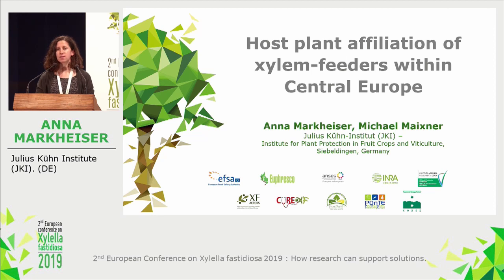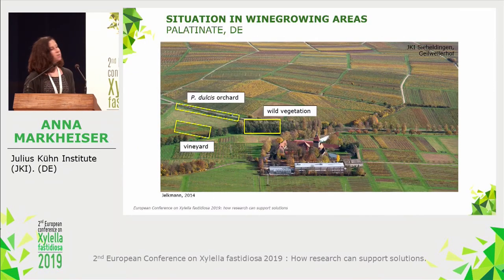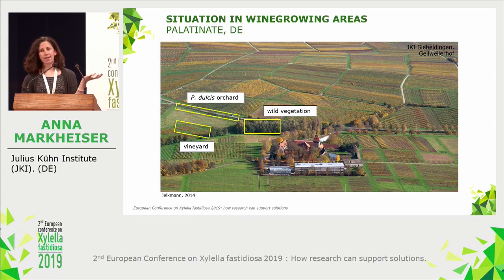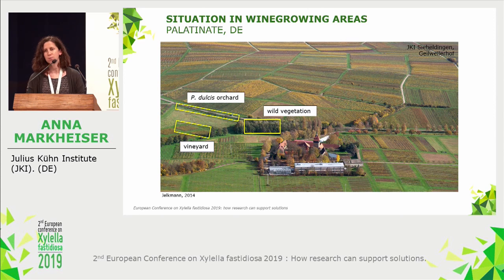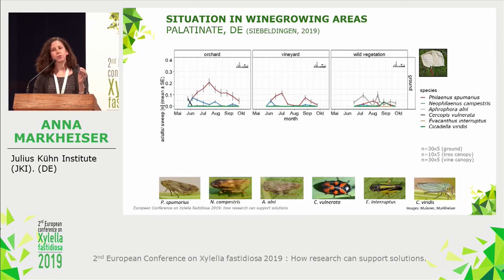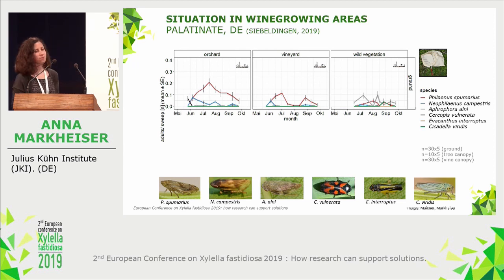This is a typical situation in German wine-growing regions: the vineyards are normally interrupted by smaller orchards or alleys such as almonds and cherries, and beside these vineyards are often smaller forest areas. To identify candidate vectors for Germany, we performed a survey by collecting insects with a sweep net from the ground cover and the canopy of trees and vines. You can see the number of collected individuals over the season in three habitat types. The identified vector Philaenus spumarius in red is present from the end of May until the beginning of October.